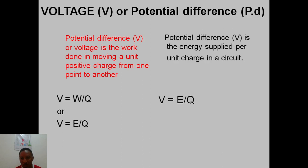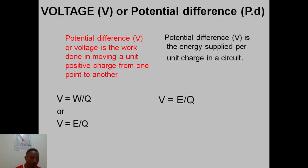We can also look at it from this other angle: it's the energy supplied per unit charge — that is, the energy supplied by the cell for one charge to carry to the component in the circuit. So how much energy is supplied for one charge to carry throughout the circuit to any component — that's the voltage or potential difference. We can say voltage V equals work over charge or energy over charge.